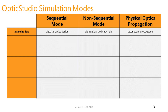We have three different simulation or calculation modes within OpticStudio. The first is sequential mode, used for classical optics design. Then we have non-sequential mode, used more for illumination and stray light. And thirdly, physical optics propagation, intended for laser beam propagation. Both sequential and non-sequential modes are primarily ray-based calculations with some diffraction theory applied near focus. Physical optics propagation includes more wave-based calculations.